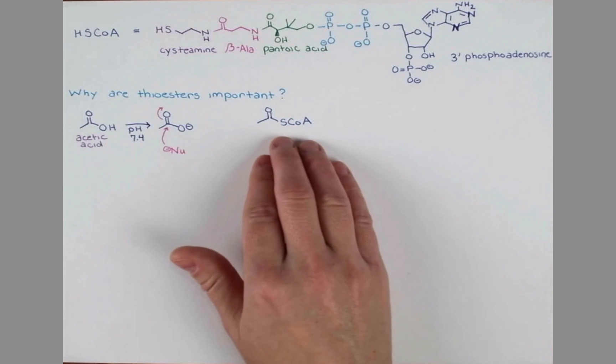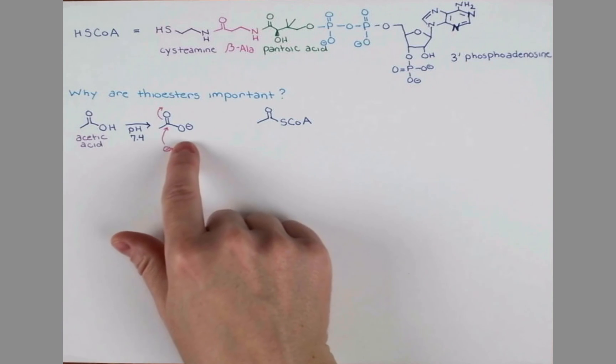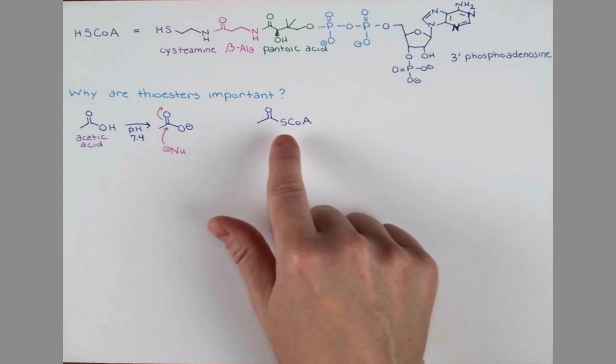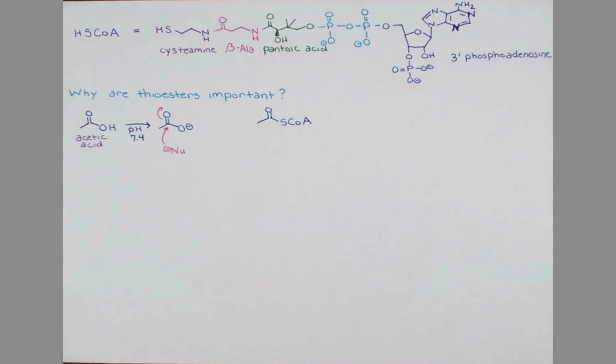But here in this thioester, we don't have this buildup of negative charge. And we have sulfur, a good leaving group. So if we treat our coenzyme A ester with a nucleophile, we'll get displacement of the S-CoA group.